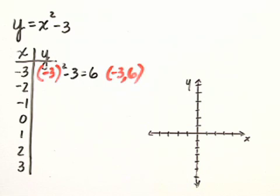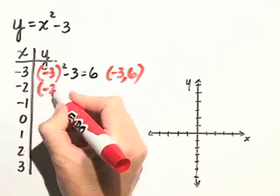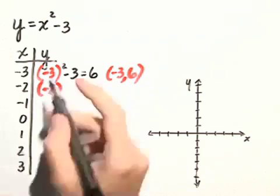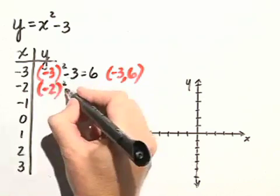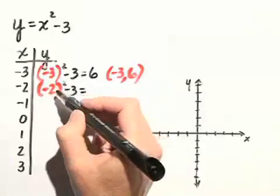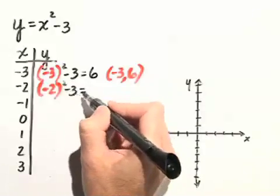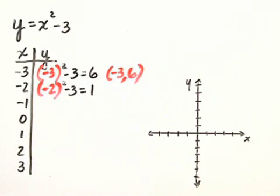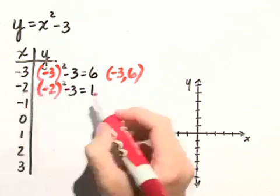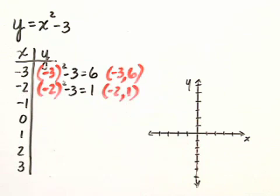Next, we'll substitute negative 2 in for x. So we have negative 2 squared minus 3. Negative 2, when we square it, is equal to positive 4, minus 3 is equal to 1. So this point will be represented by an x-coordinate of negative 2 and a y-coordinate of 1.